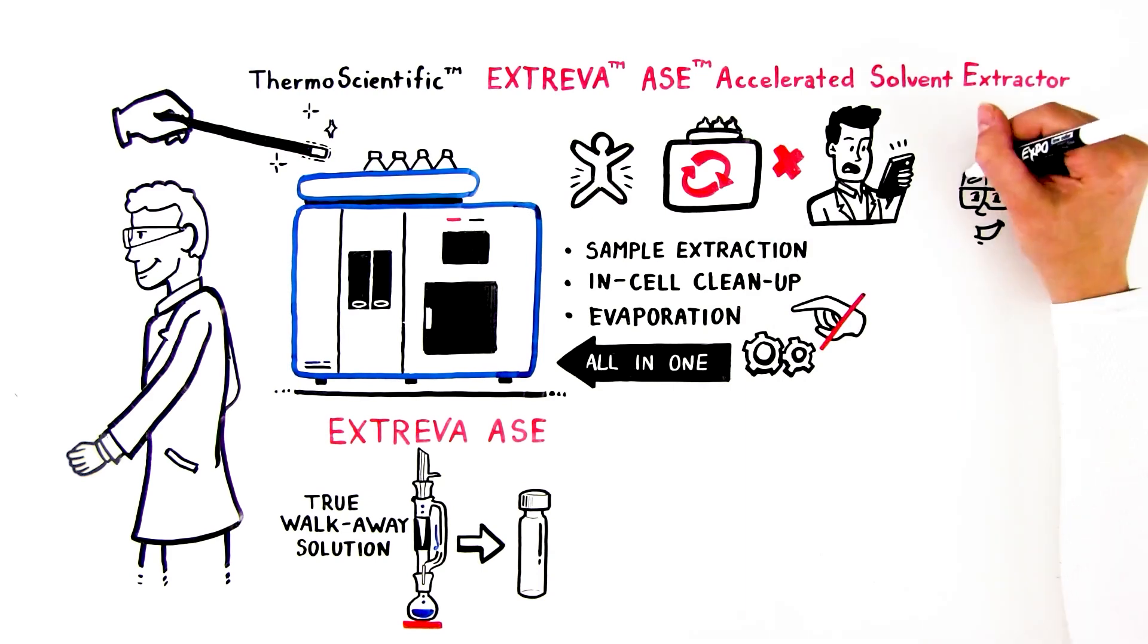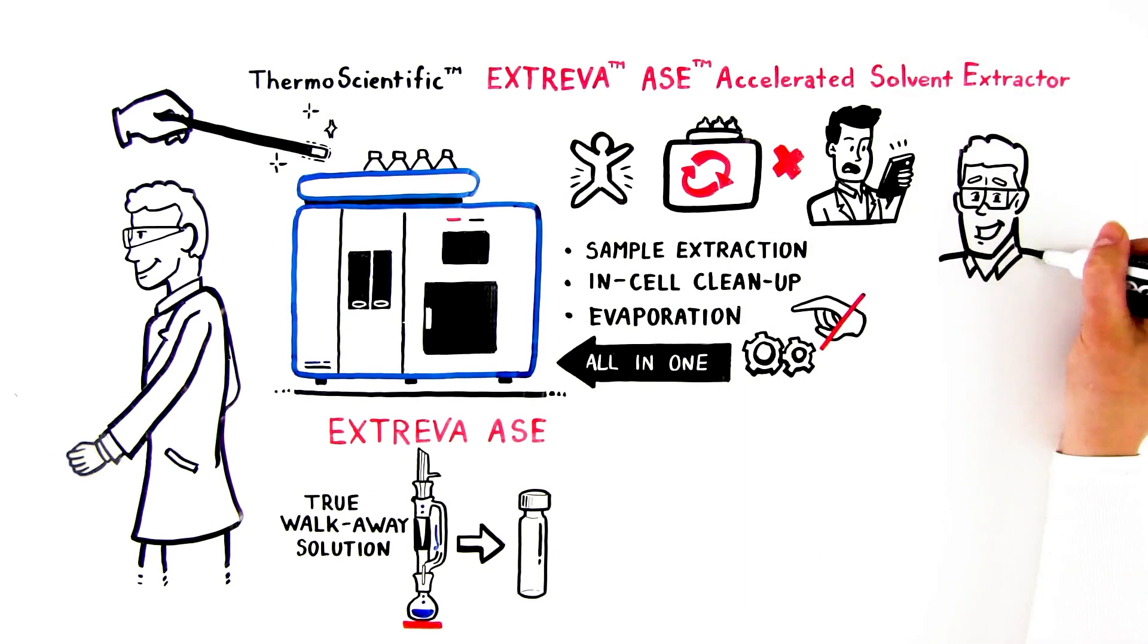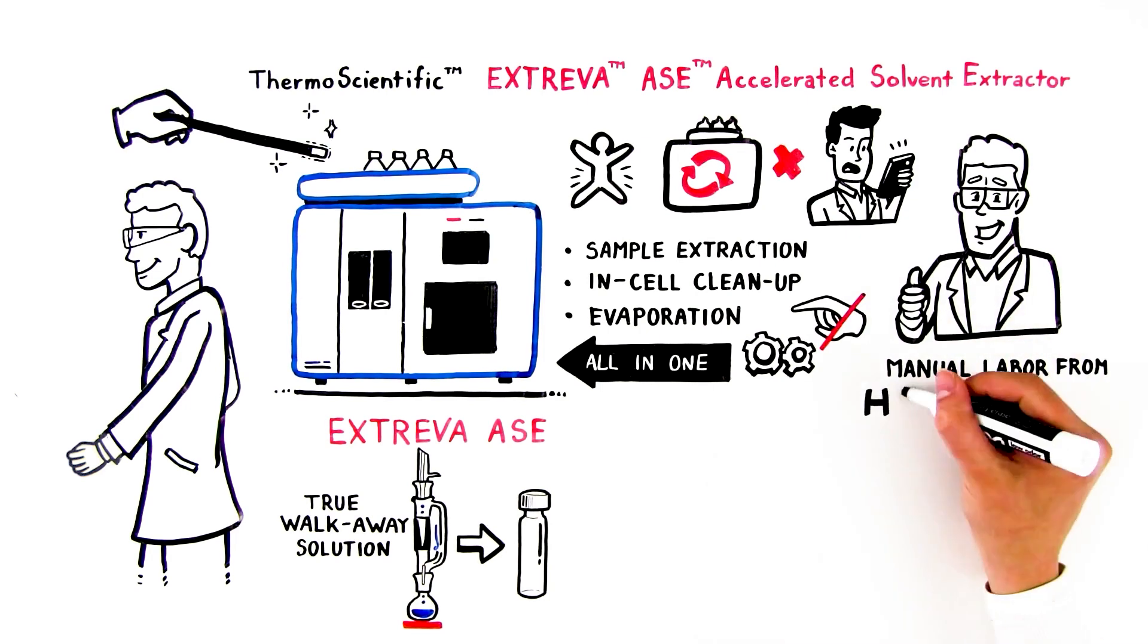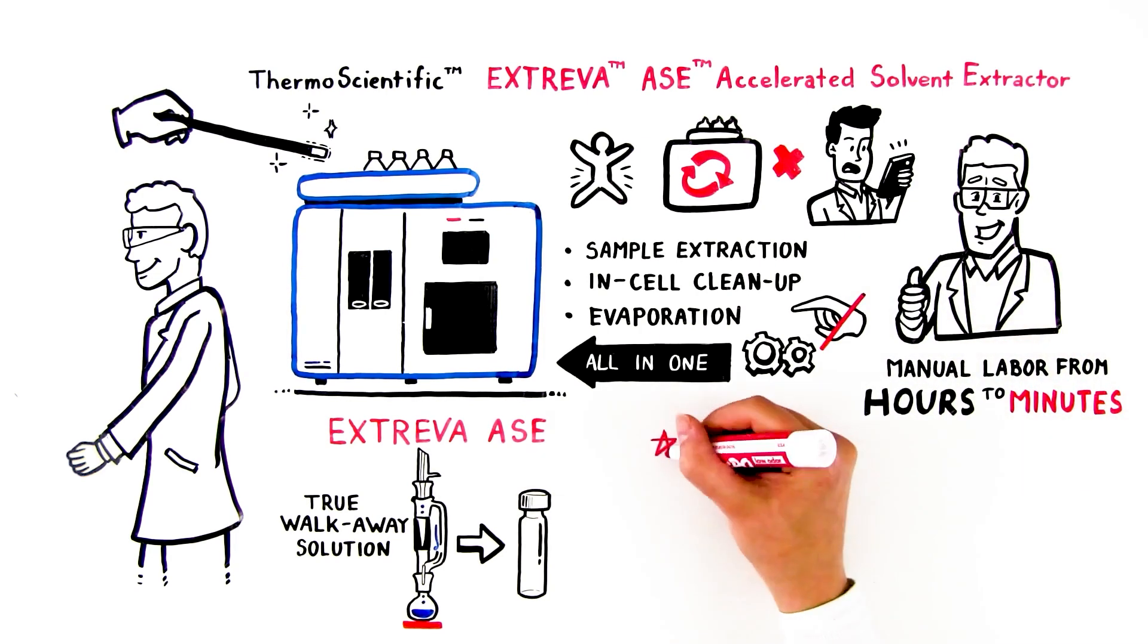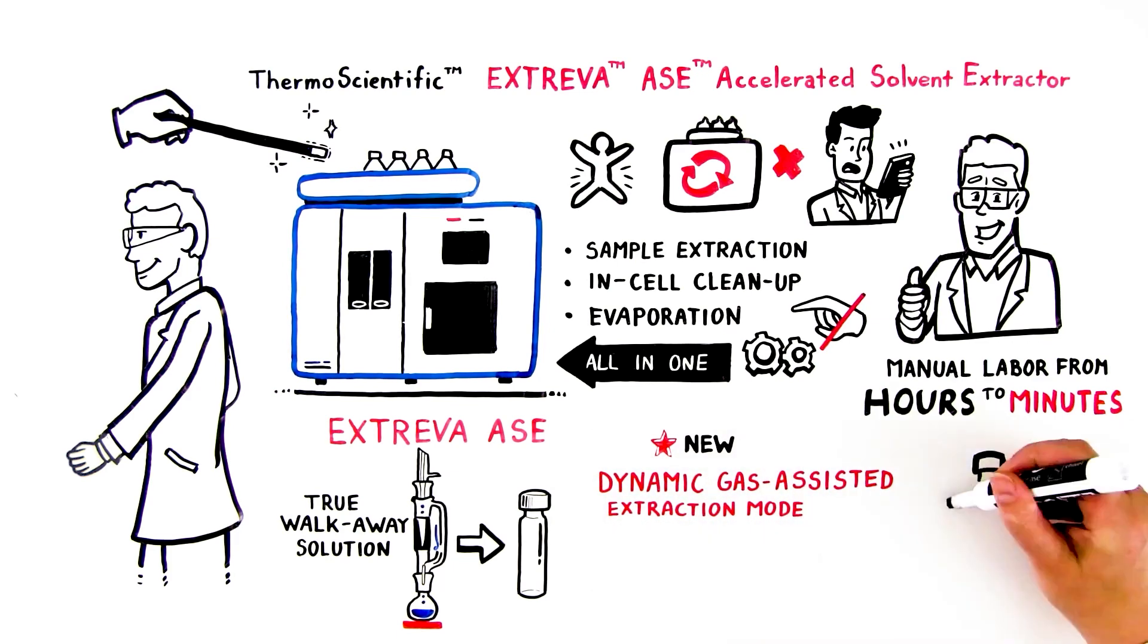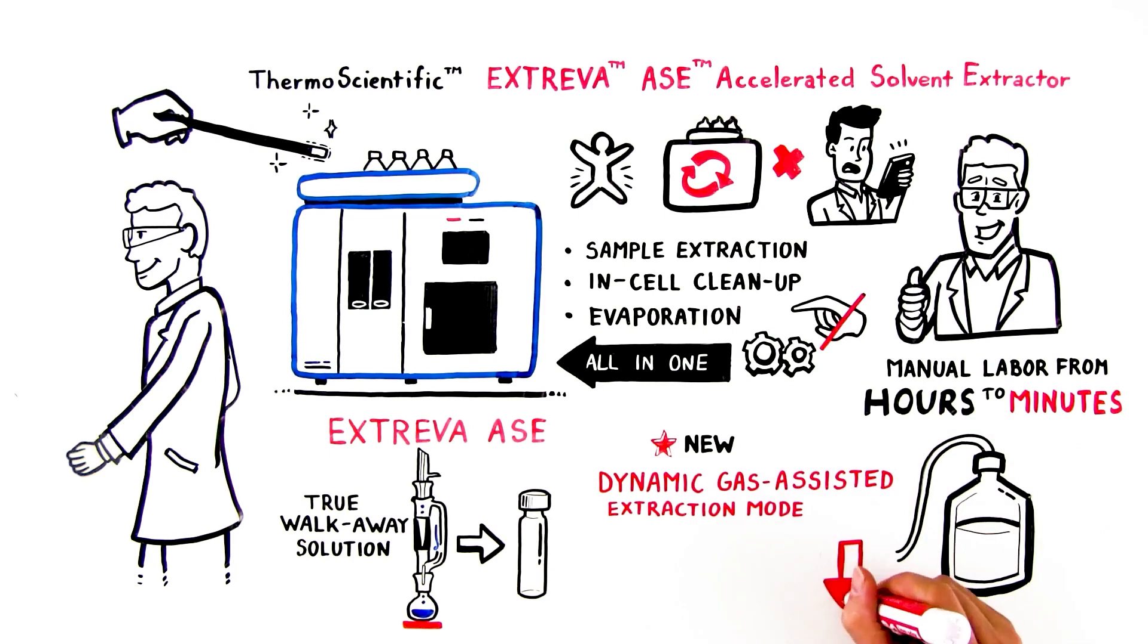That means user interaction is no longer necessary for each step, which cuts the manual labor required from hours to minutes. Using the new dynamic gas-assisted extraction mode, solvent consumption is also greatly reduced, down to between 5 and 100 milliliters per sample in most cases.